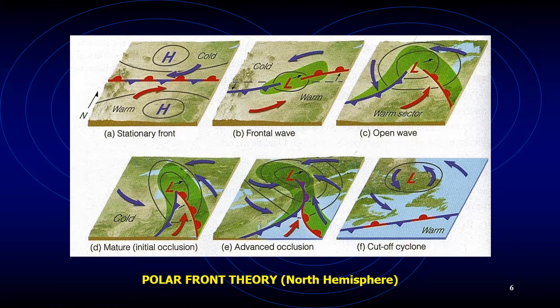The system gradually becomes a fully developed open wave in 12 to 24 hours, as shown in part C. The central pressure is now much lower and several isobars encircle the wave's apex. These more tightly packed isobars create a stronger cyclonic flow as winds swirl counterclockwise and inward toward the low pressure center. Precipitation forms in a wide band ahead of the warm front and along a narrow band of the cold front. The region of warm air between the fronts is now called the warm sector.